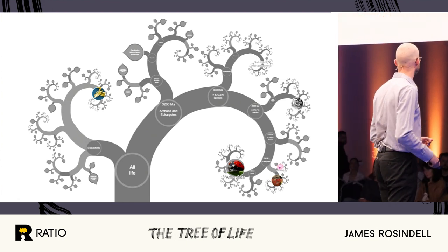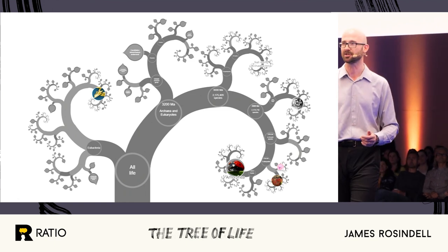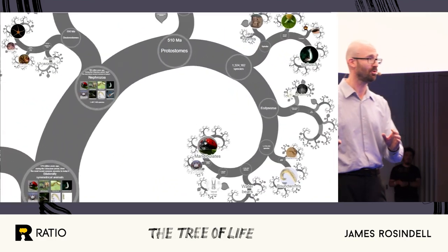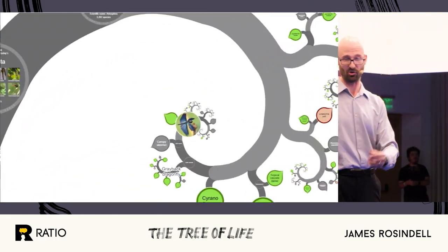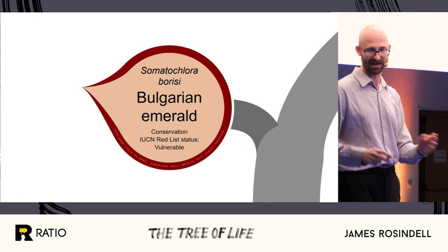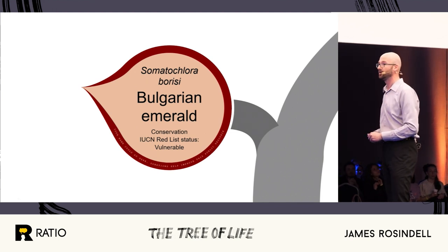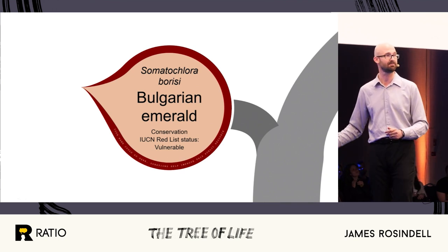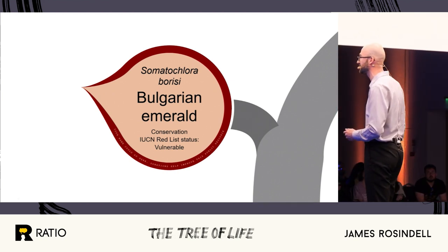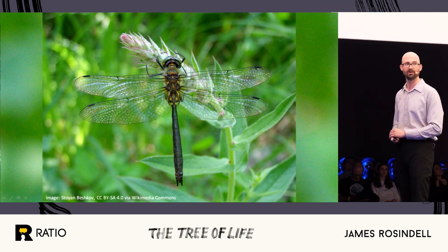I wonder whether any of you have heard of the Bulgarian emerald? Nobody — good, because I'm going to show you where the Bulgarian emerald is on the tree of life. So all of these 2.2 million leaves are there on the screen somewhere. We've quickly zoomed into animals, now insects, now dragonflies. The Bulgarian emerald is a dragonfly. You'll see that this leaf is red — red is the color we're using to represent species under threat of extinction. Unfortunately, this species is under threat: there are only 9,000 of them left in the wild, but they do live in Bulgaria, also in Greece and Turkey.